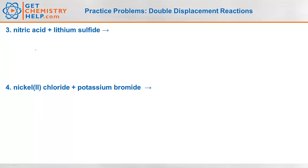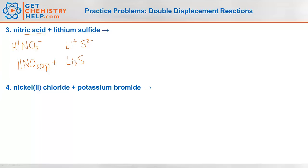How about number three? Nitric acid reacts with lithium sulfide. Nitric acid — the '-ic acid' ending means the anion is nitrate, NO₃⁻. Combined with H⁺ to make an acid, it must be HNO₃, which is aqueous. Lithium is in group 1, so 1⁺. Sulfide comes from sulfur, which is two away from the noble gases, so 2⁻. So lithium sulfide is Li₂S. All lithium-containing compounds are soluble, so aqueous.